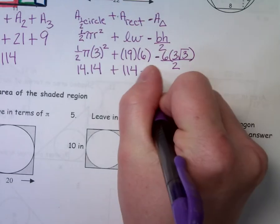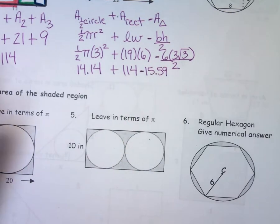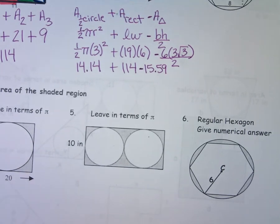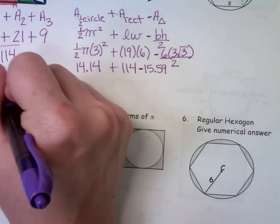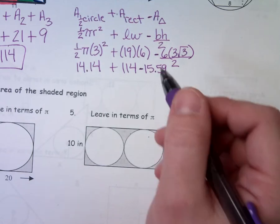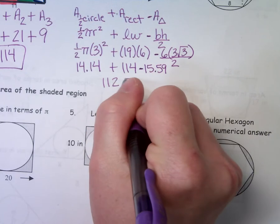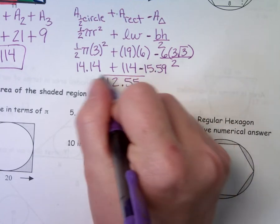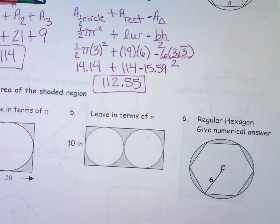So we're subtracting minus 15.59. Throw that all in your calculator and tell me what you get. 112.55? Are we going too fast? No, I was just trying to type it all in.